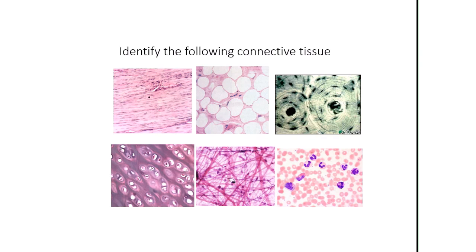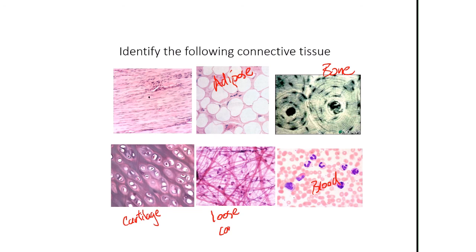To review connective tissue identification: you should be able to identify them in pictures. Bone looks like rings and circles. Adipose tissue has lots of empty space. Blood is also a connective tissue. Cartilage looks like little glassy circles. Loose connective tissue is not very compact, while dense connective tissue is more compact. If the fibers are organized into parallel strands, that's dense regular connective tissue — as you'd find in tendons.